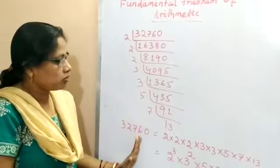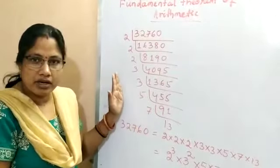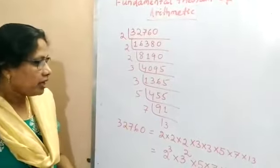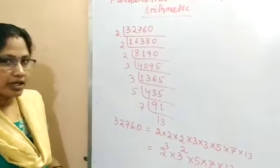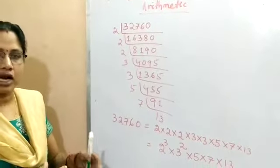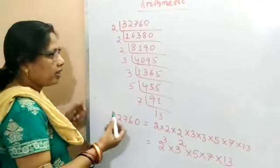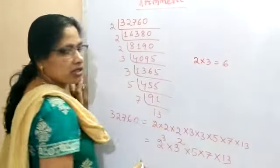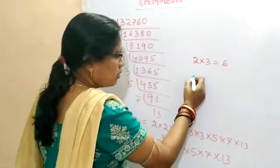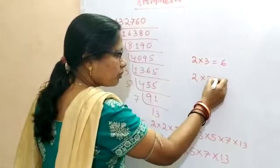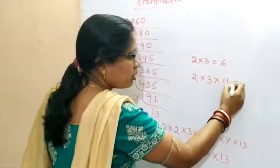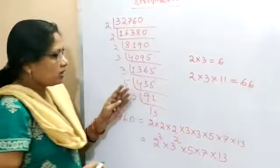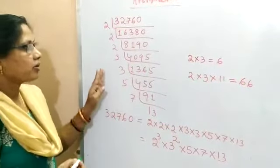From all these examples, we conclude that every composite number can be factorized as the product of prime factors. And if we multiply prime numbers, that will also become a composite number. For example, 2 × 3 = 6, which is a composite number, and 2 × 3 × 11 = 66.